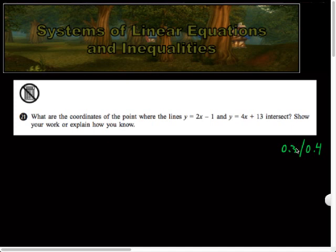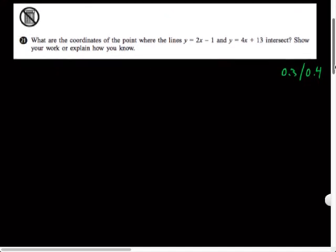So that means about 15% of our students got this right-ish, and 20% of the state got it right-ish, although I think you could get partial credit on it. It said, what are the coordinates of the point where the lines y equals 2x minus 1 and y equals 4x plus 13 intersect? Show your work or explain how you know.